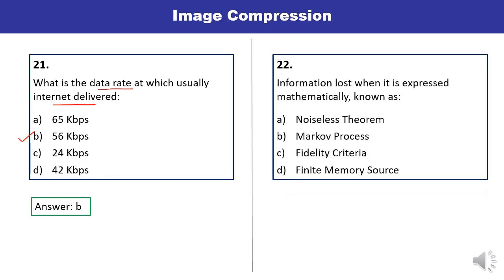Question 22: Information lost when it is expressed mathematically — that type of information is known as noiseless theorem, Markov process, fidelity criteria, or finite memory source? Information lost when expressed mathematically is actually the fidelity criteria. Answer is C.